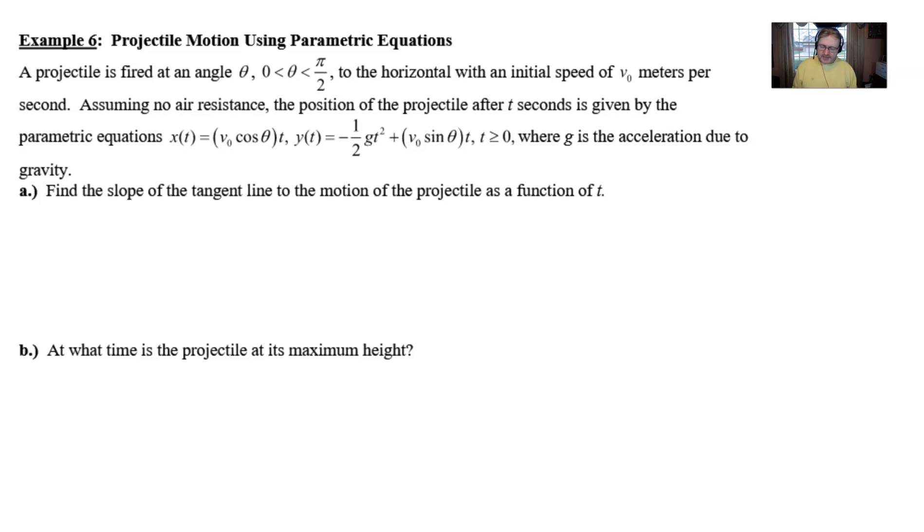We're seeing this problem as this projectile that's fired at an angle theta, where theta is between zero and pi over two to the horizontal, and we're given this initial speed of v sub zero meters per second. Assuming no air resistance, the position of the projectile after t seconds is given by the parametric equations: x of t is v sub zero cosine theta t, y of t is negative one half gt squared plus v zero sine theta times t.